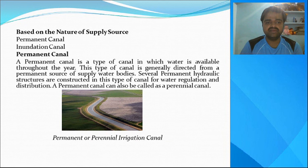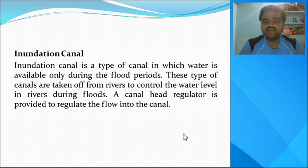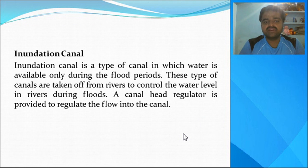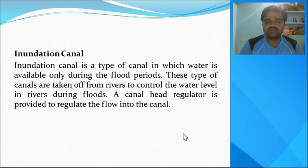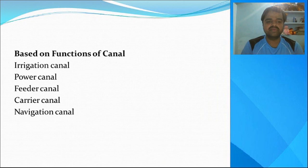An inundation canal is a type of canal in which water is available only during flood periods. Comparing the two types: in a permanent canal, water supply is available throughout the year, whereas in an inundation canal, water supply is available only during flood periods. That is the major difference between a permanent canal and an inundation canal.